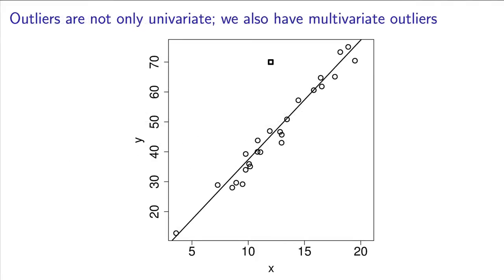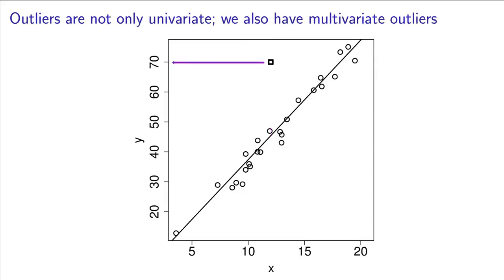From the viewpoint of only the x-axis, a value of 12 is right in the middle of that distribution. From the viewpoint of the y-axis, a value of 70 is high, but not extreme. Jointly, however, from the context of both the x- and y-axis, it is an outlier. That's why we can't create rules to simply define an outlier.